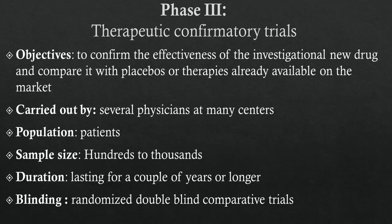Phase 3: Therapeutic Confirmatory Trials. The goal of Phase 3 trials is to confirm the effectiveness of the investigational new drug and compare it with placebos or therapies already available on the market. Generally these are randomized double-blind comparative trials conducted on a larger patient population by several physicians at many centers. Phase 3 trials are the most expensive and time-consuming, lasting for a couple of years or longer to establish long-term safety.